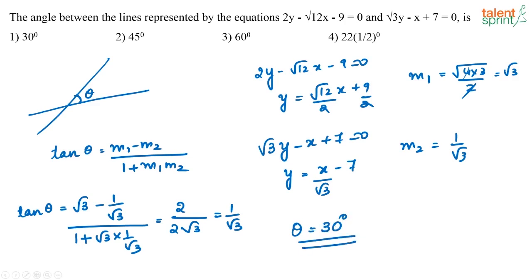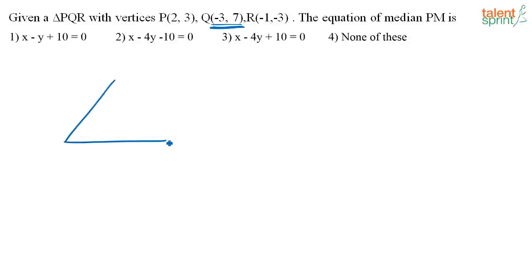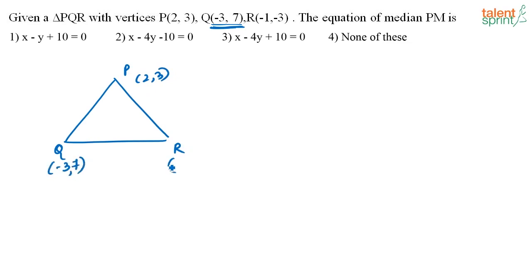The angle between the lines is 30 degrees, that is option 1. Now, you are given a triangle PQR with vertices P(2,3), Q(-3,7), and R(-1,-3).